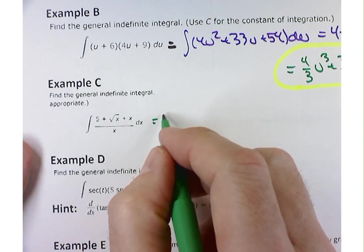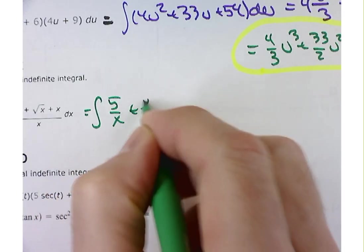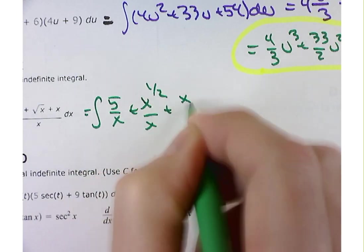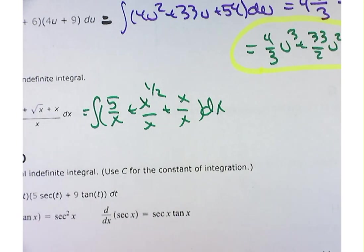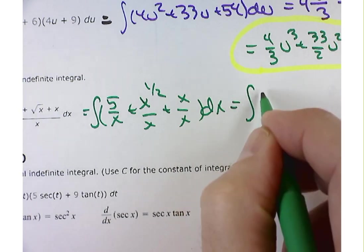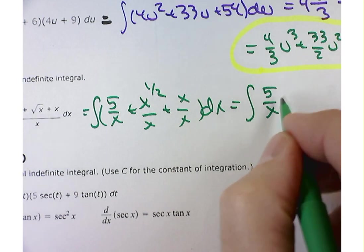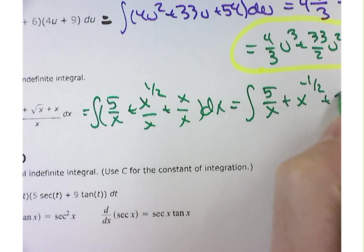For myself, that becomes the integral of 5 over x plus x to the 1 half over x plus x over x. Please write the dx. Let's simplify this. I'm going to leave that as 5 over x plus x to the negative 1 half plus 1 dx.